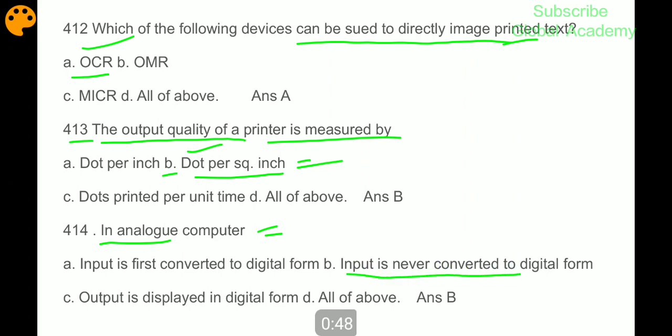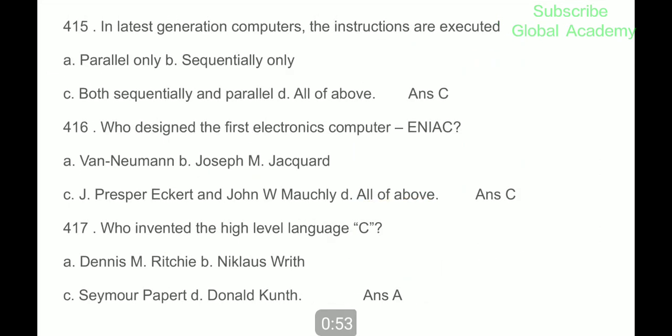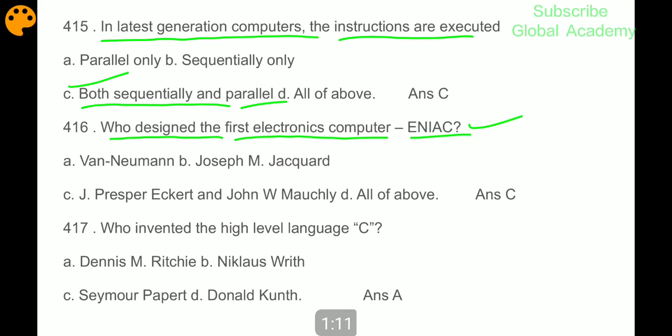In latest generation computers the instructions are executed both sequentially and parallel. Who designed the first electronic computer ENIAC? It was designed by J. Presper Eckert and John W. Mauchly. Who invented the high level language C? It was invented by Dennis M. Ritchie.